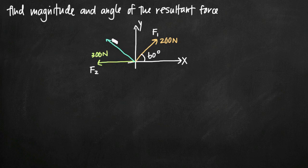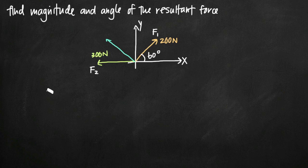We want to know the magnitude of that resultant force — in other words, the length of the vector — and also the angle created between this resultant force and the positive direction of the x-axis. The first thing we need to do is model F sub 1 and F sub 2 as vectors.